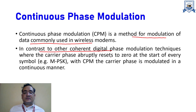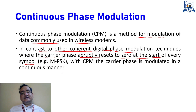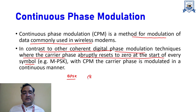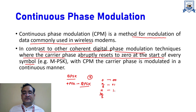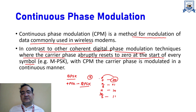In contrast to other coherent digital schemes like PSK, ASK, and FSK, conventional phase modulation techniques cause the carrier phase to abruptly reset to zero at the start of every symbol. For example, in BPSK the phase difference between one and zero is pi. For QPSK, the quadrature phase shift keying, the difference will be pi by two — that means zero, pi/2, pi, and 3pi/2 are the four phase differences between symbols 00, 01, 10, and 11.